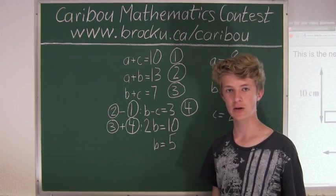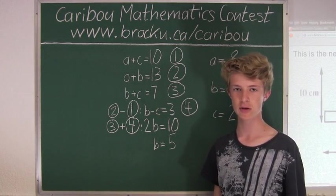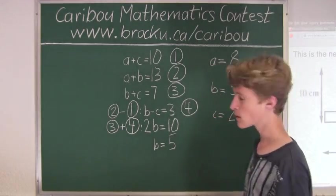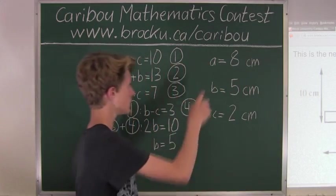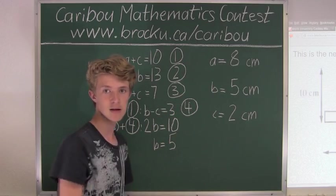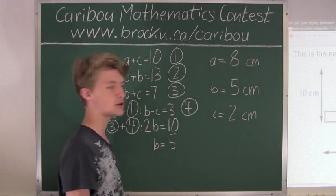Now since we want to find out the volume of the prism, we have to multiply those three sides together, which is A, B, and C. We will do 8 times 5 times 2 is 40 times 2 is 80. So the volume is 80 centimeters cubed.